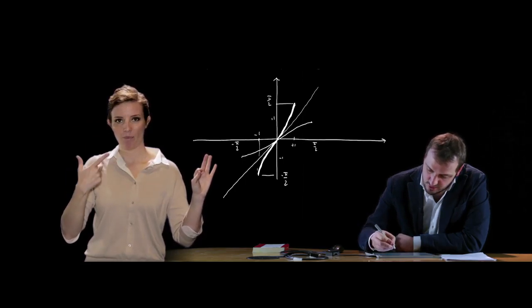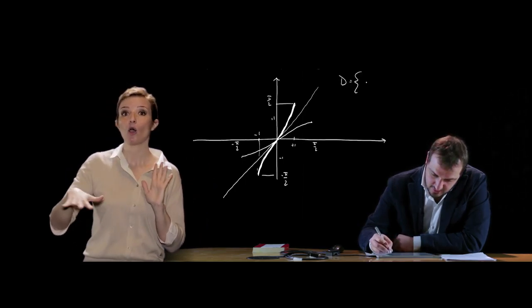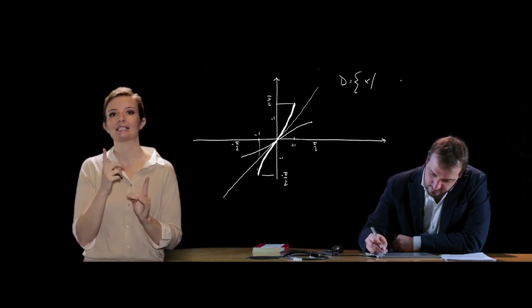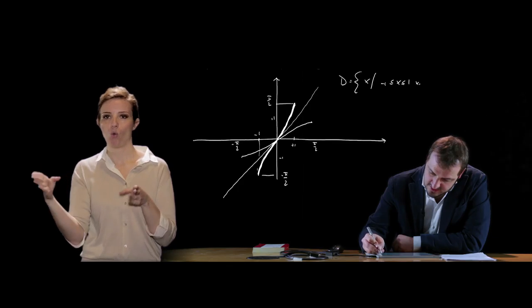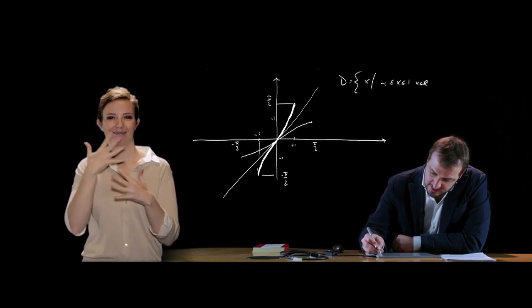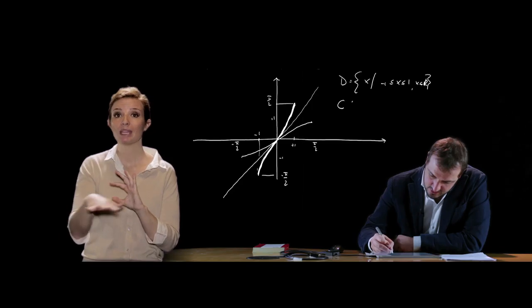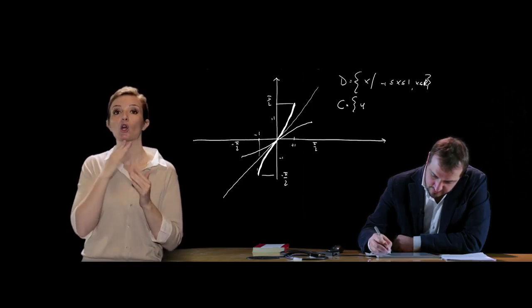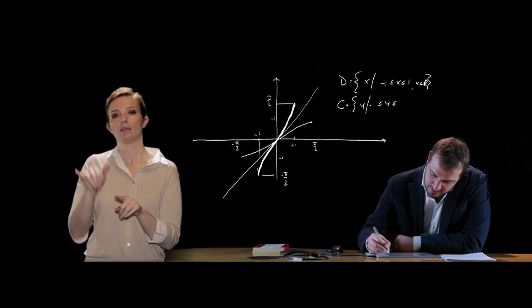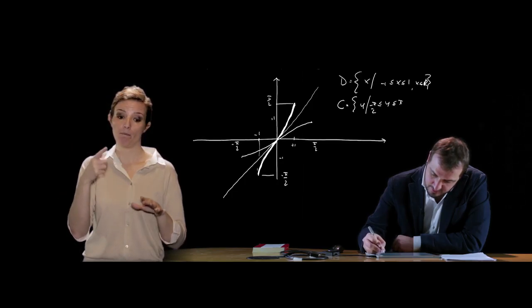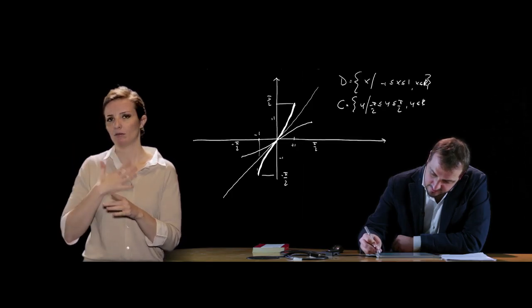Le caratteristiche della funzione arco seno: il dominio è {x ∈ ℝ : −1 ≤ x ≤ 1} e il codominio è {y ∈ ℝ : −π/2 ≤ y ≤ π/2}.